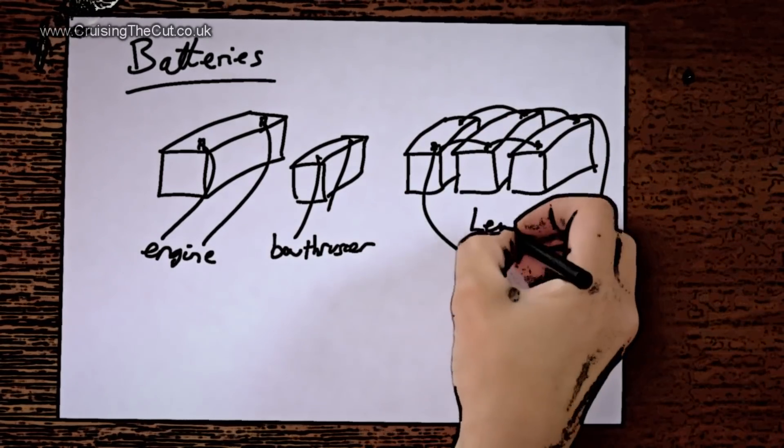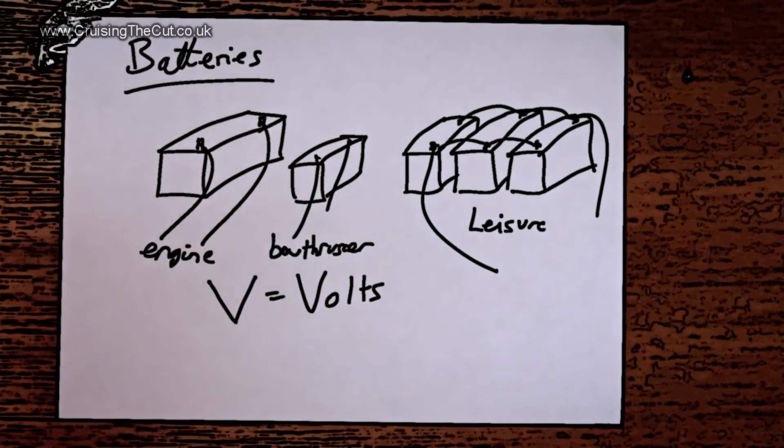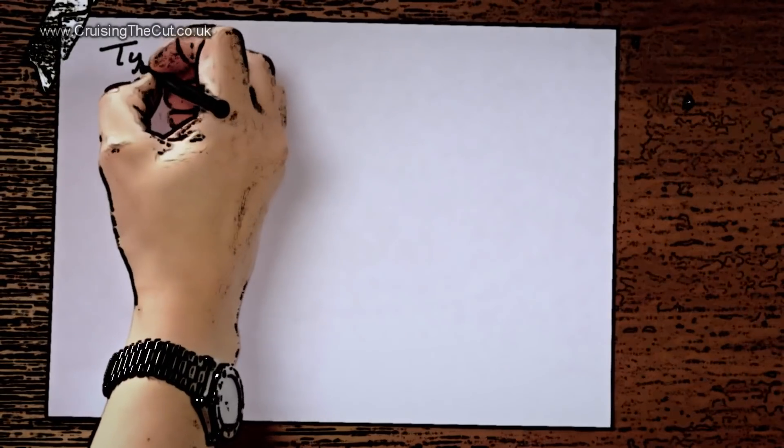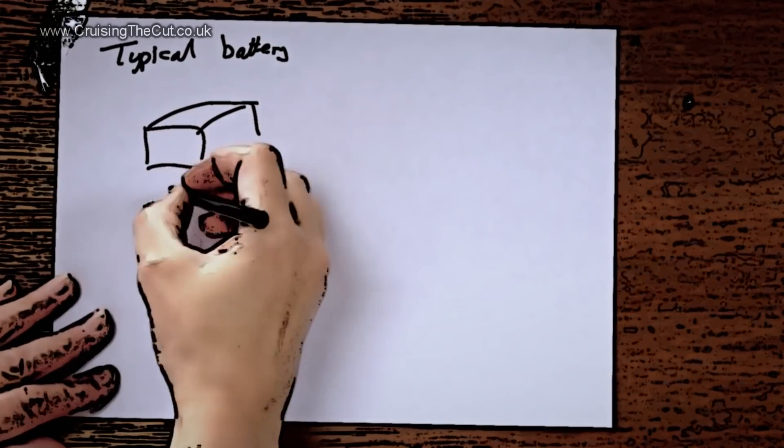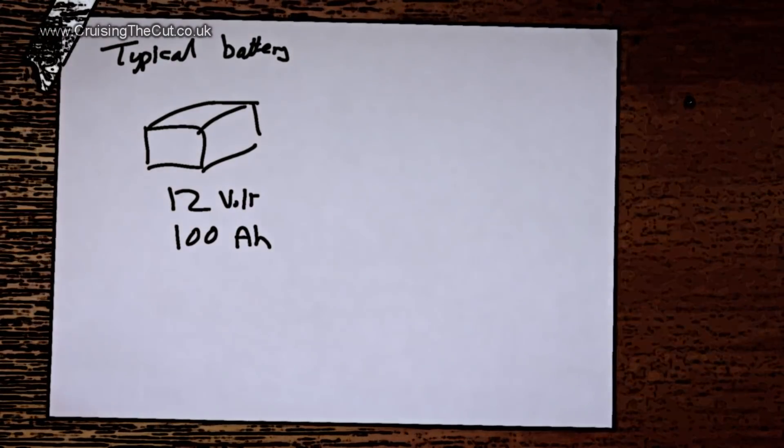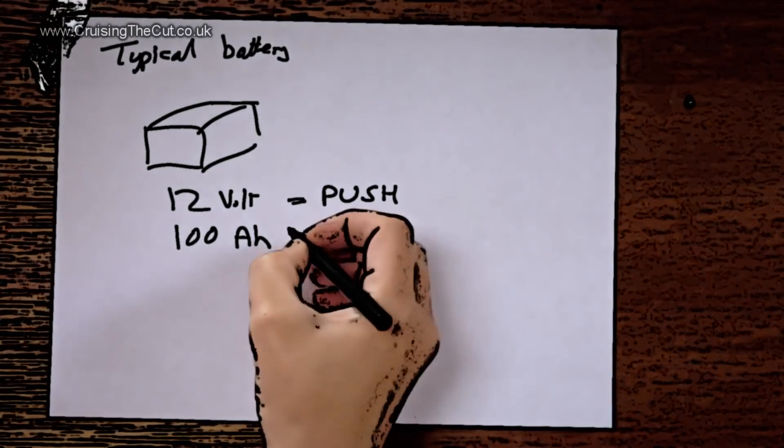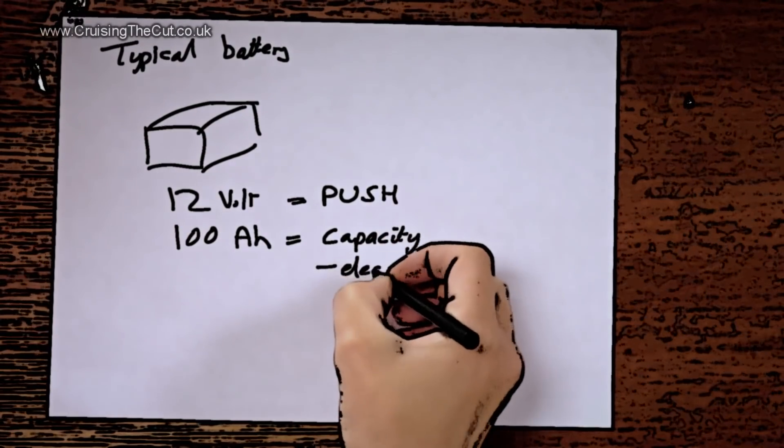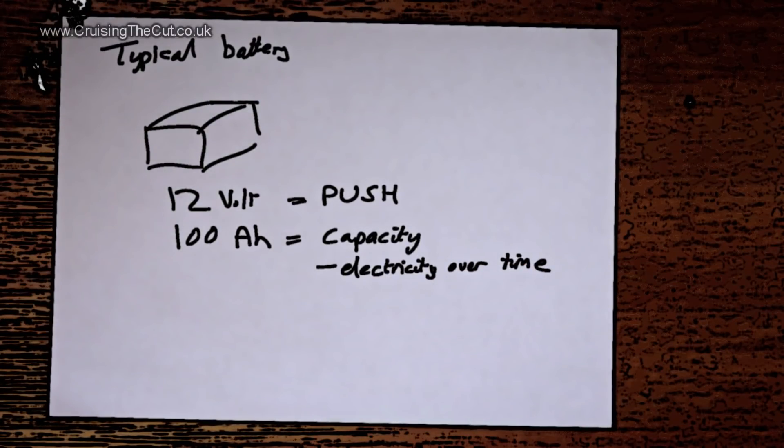Here's where it starts to get a bit technical. Batteries have both a voltage measured in volts and a capacity measured in amp hours. A typical battery might be rated at 12 volt 100 amp hours. But what does that mean in practice? Well, voltage is like the pressure at which the electricity is squirted around the system - the higher the voltage, the higher the push of the electricity. Meanwhile, amp hours relates to how much electricity the battery can deliver over a given period of time until it's got no more electricity left.